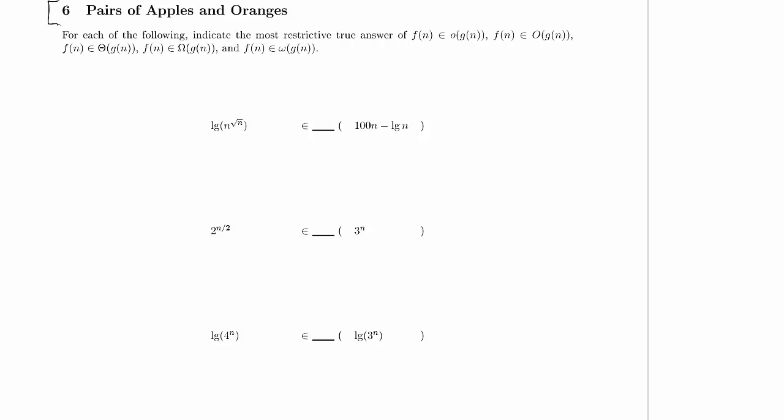For each of the following, we're supposed to indicate the most restrictive true answer of: f(n) is in little o of g(n), f(n) is in big O of g(n), f(n) is in big theta, f(n) is in big omega, or f(n) is in little omega of g(n). So we've got a bunch of ugly functions below and we're supposed to compare them. Let's just go through them one after another.